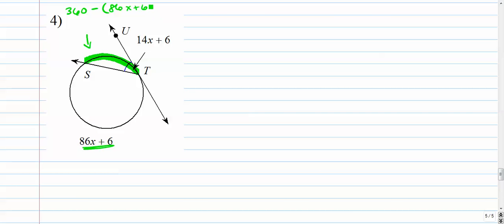Alright, because the whole circle is 360. And the expression that they give you is over here. That's in blue. Alright, that's 86x plus 6. So the green arc is everything except that. So it's 360 minus that thing. Notice I put it in parenthesis as well.